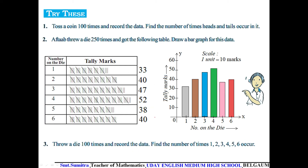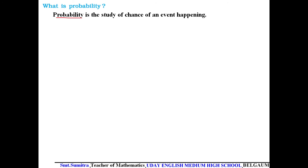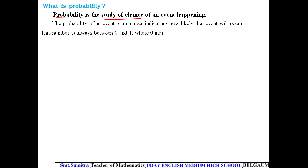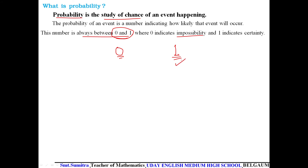What is probability? Probability is the study of the chance of an event happening. The probability of an event is a number indicating how likely that event will occur. Note that probability always lies between 0 and 1. Zero indicates an impossible event that never happens; 1 indicates the event will happen with 100% certainty.